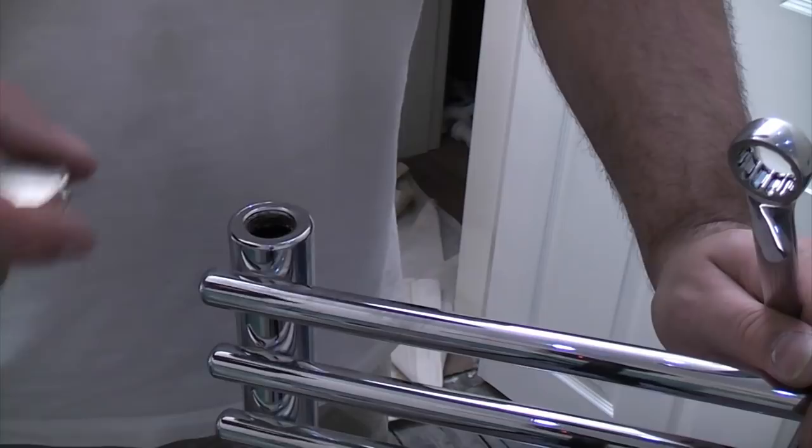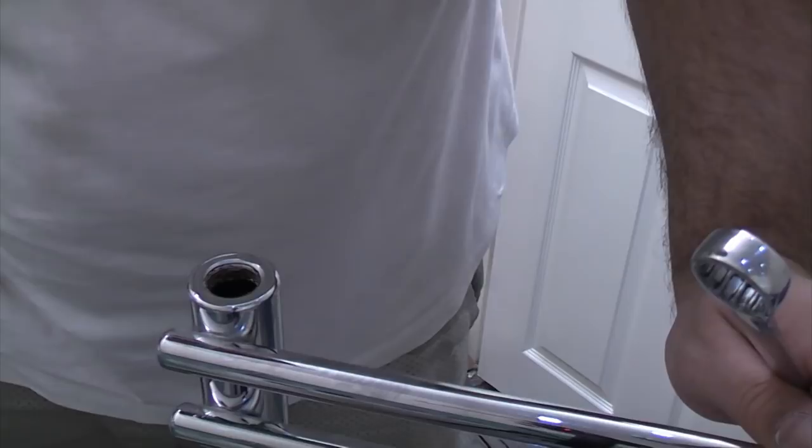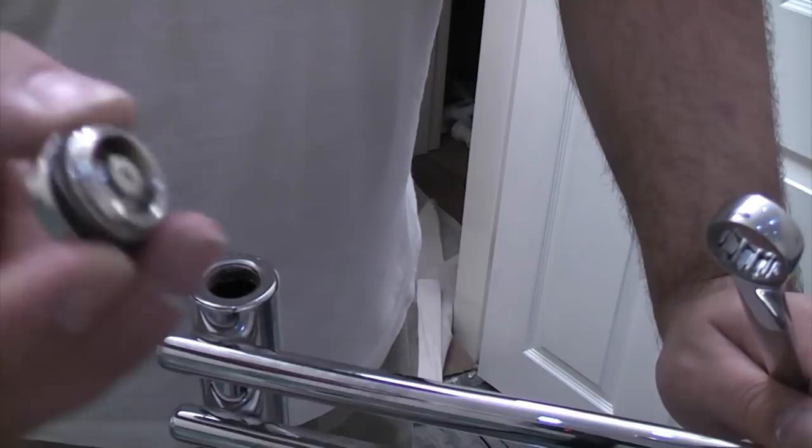This is the towel radiator that we're going to be fitting. With it you get a blanking plug and the bleed valve and these both screw into these holes on the top.